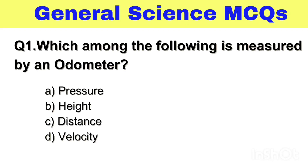Question No. 1. Which among the following is measured by an odometer? Option A. Pressure, B. Height, C. Distance, D. Velocity. The right answer, Option C. Distance.